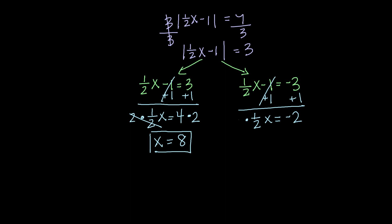And again, to clear out this 1 half, I'm going to multiply both sides of the equal sign by 2. So, x equals negative 4.